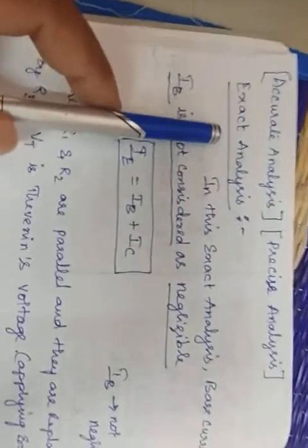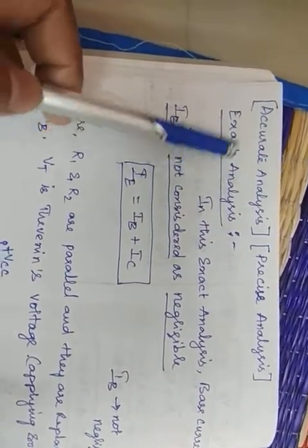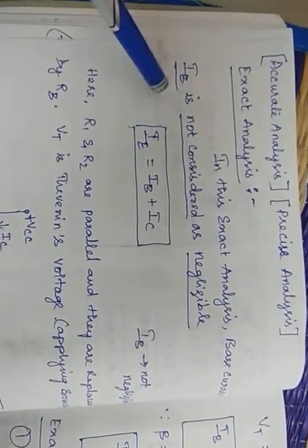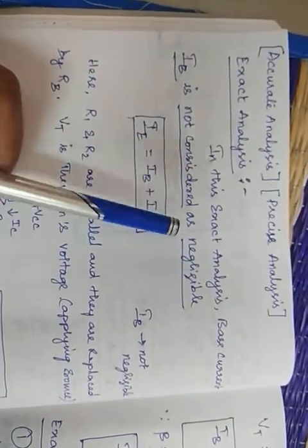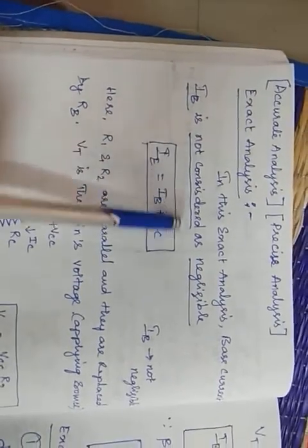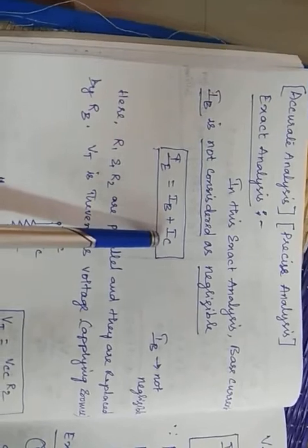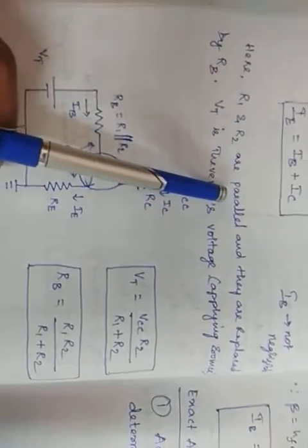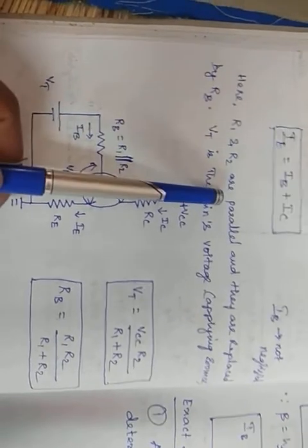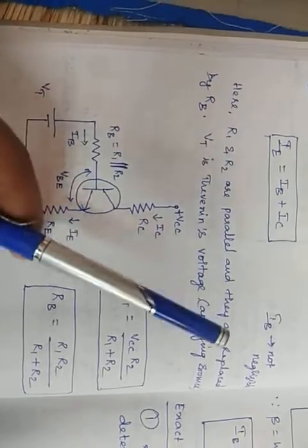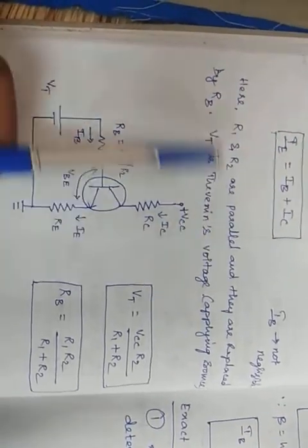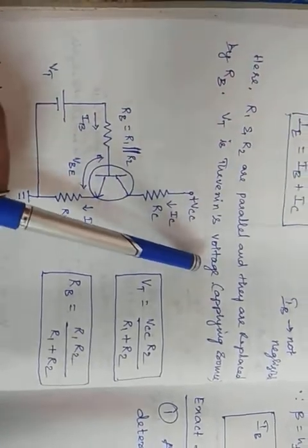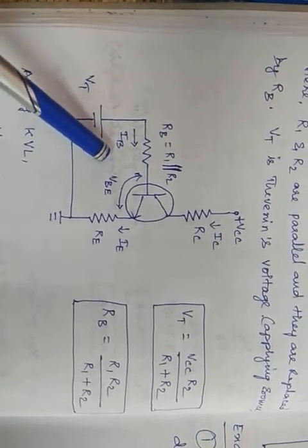Now we move to exact analysis. The main difference between approximate and exact analysis is that in approximate analysis IB is negligible, whereas in exact analysis IB is not negligible. In exact analysis, IE = IB + IC, and R1 and R2 are treated as parallel (not series), replaced by an equivalent resistance RB. The Thevenin voltage VT is used instead of VB.